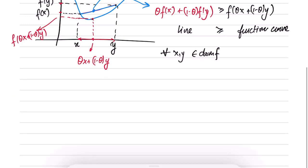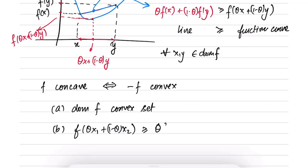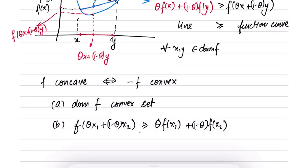There is also a related definition of f being a concave function. f is concave if and only if −f is convex. Equivalently, the domain of f is a convex set, and the second condition holds with the inequality reversed: f(θx1 + (1−θ)x2) ≥ θf(x1) + (1−θ)f(x2). The key difference between convex and concave is that the inequality is reversed; the first condition remains the same.